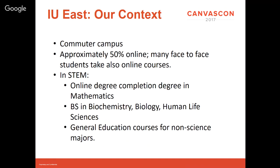Because they have to work. In the School of Natural Science and Mathematics, we have an online degree completion degree for transfer students in mathematics, and face-to-face degrees in Bachelor of Science in Biochemistry, Biology, and Human Life Science. Even in those degrees, a lot of students take a significant amount of coursework online. We also offer general education courses for non-science majors, and a lot of these students are online — they're not near campus.